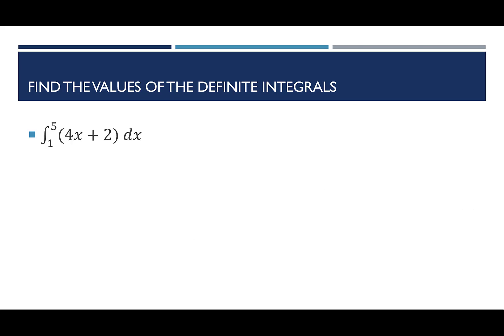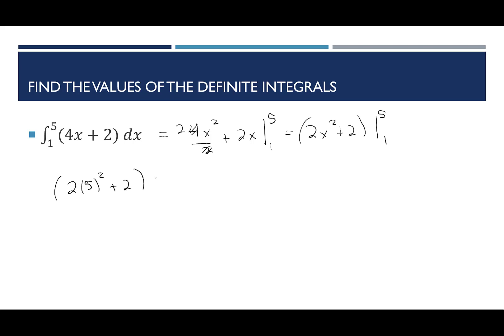Next: the integral from 1 to 5 of (4x + 2) dx. Integrating: 4x²/2 + 2x, which simplifies to 2x² + 2x, evaluated from 1 to 5. Plugging in 5: 2(25) + 2(5) ... wait, it's 2(5²) + 2 minus 2(1²) + 2. So 50 + 2 = 52, minus 1·2 + 2 = 4. Actually 2x² + 2x evaluated: (2·25 + 2·5) − (2·1 + 2·1) = (50+10)−(2+2) ... let me follow the transcript: 2(5²) + 2 = 52, minus 2(1²) + 2 = 4. So 52 − 4 = 48.